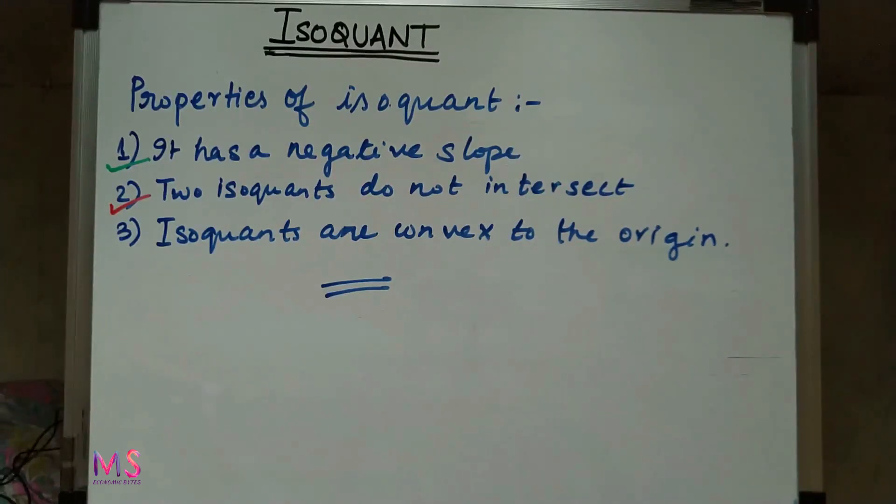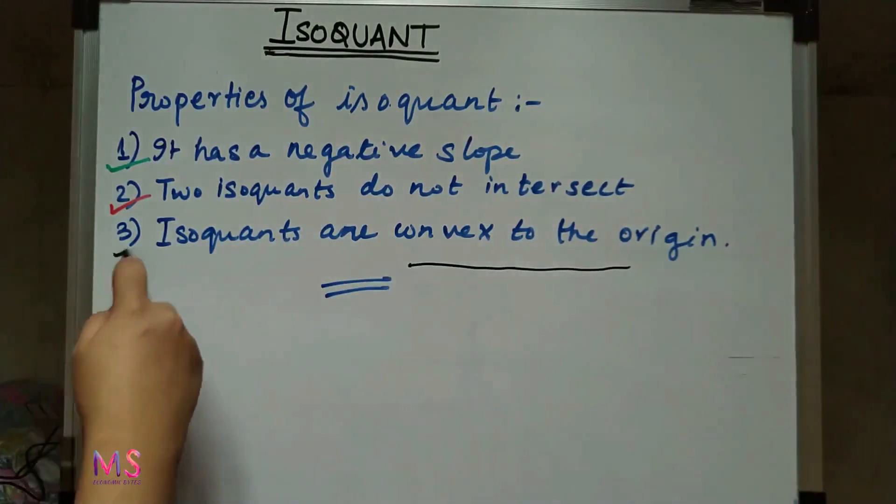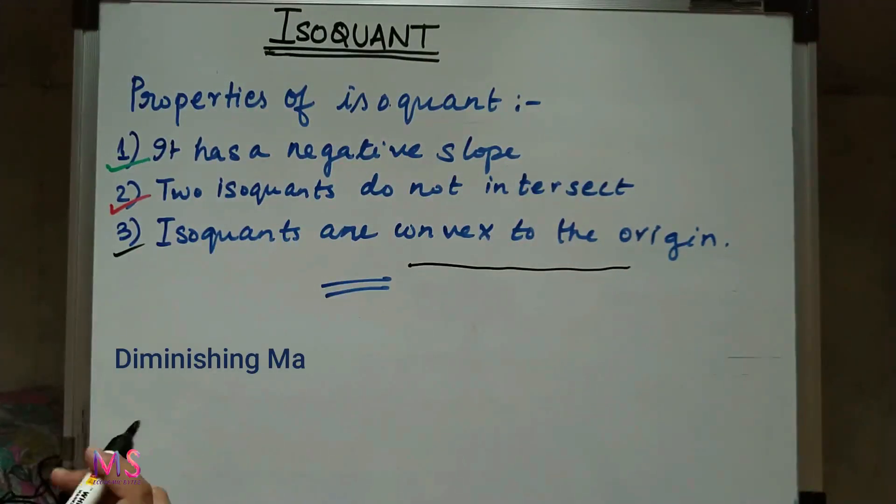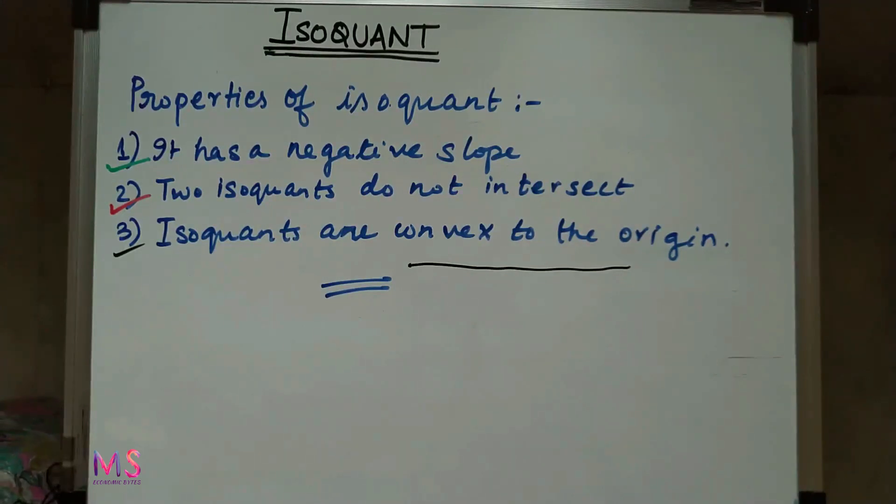And the last property of the isoquant is that isoquants are convex to the origin. It is because of the operation of diminishing marginal rate of technical substitution.